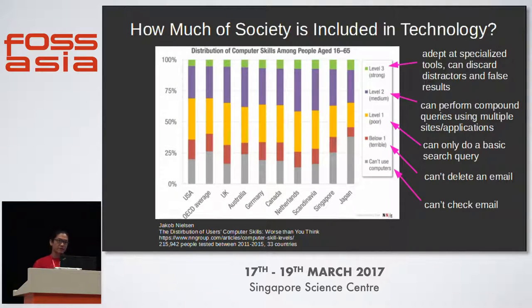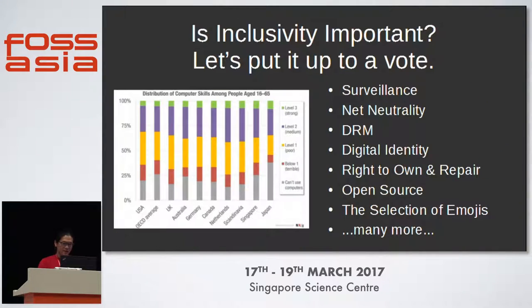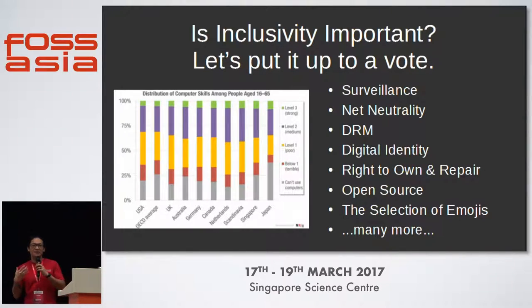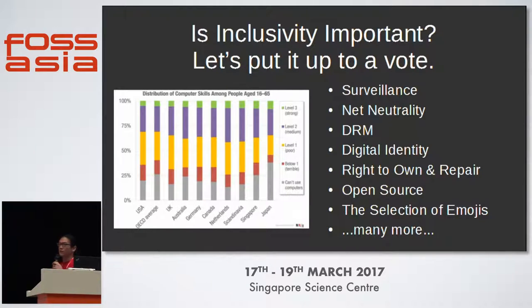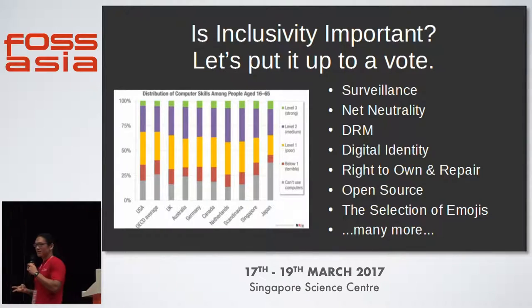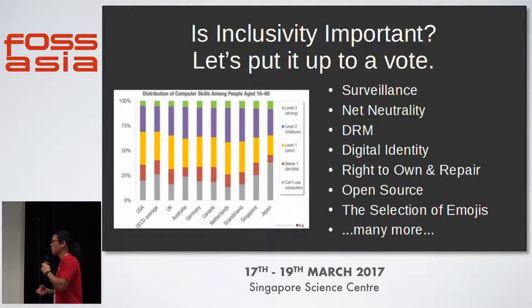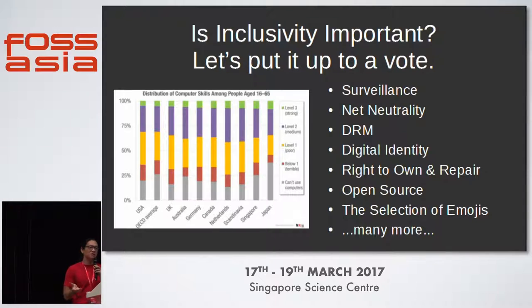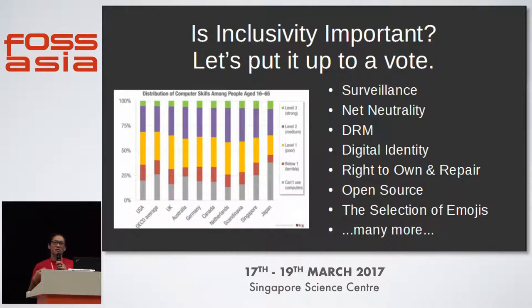Living in this bubble, it's very easy to think that we all use technology and we're all included in technology. The problem is that society has decided that voting is a good idea to decide things. So let's try to vote on things like surveillance, net neutrality, DRM, your digital identity, your right to own and repair, open source, or even the selection of emojis. Trying to explain these concepts to people who have trouble doing a search query is not going to get very far.